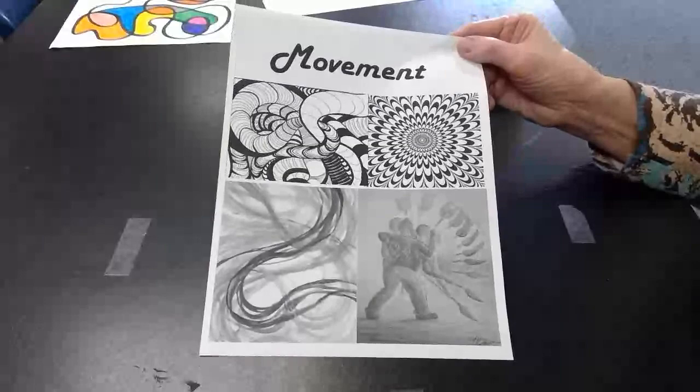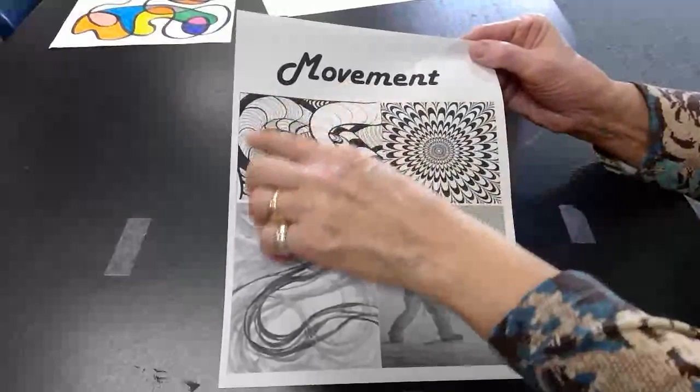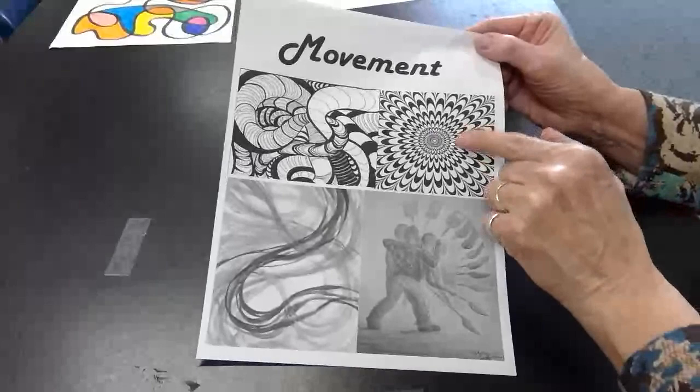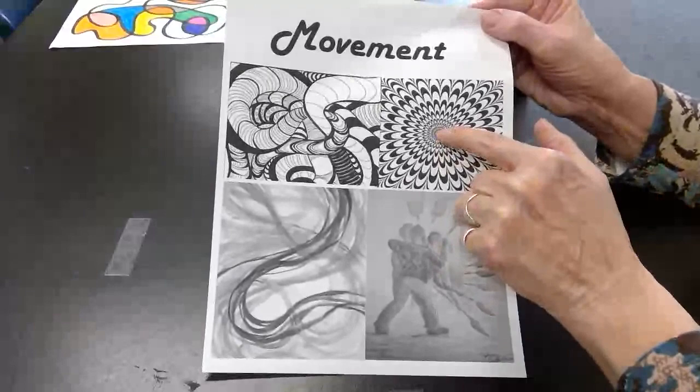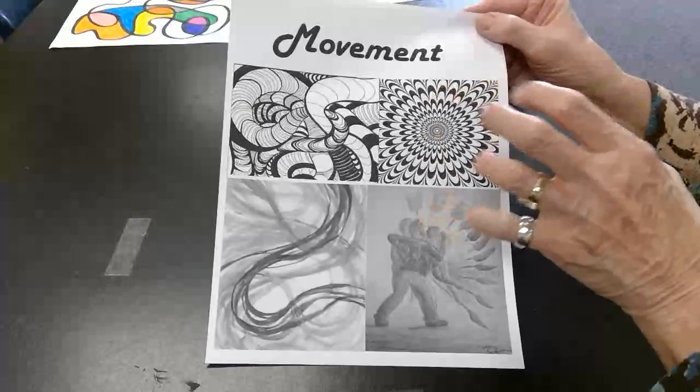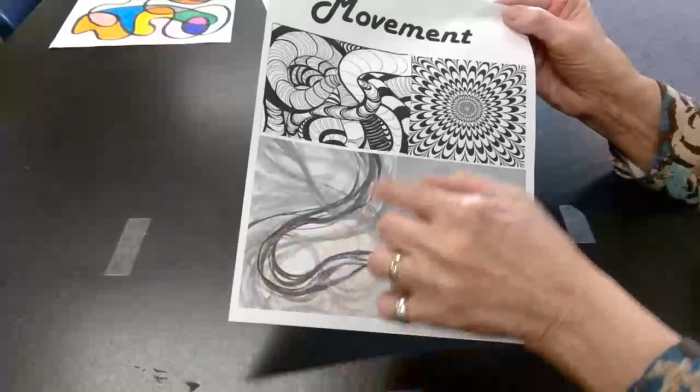Here are some different examples of movement. This one is made with a bunch of swirly lines and patterns. This one has a definite pattern that goes around in a circle, kind of looping around. If you look at the middle and stare at it for a while, it kind of starts looking like the whole picture is moving. And this one is just a painted picture of lines swirling around everywhere, creating movement.